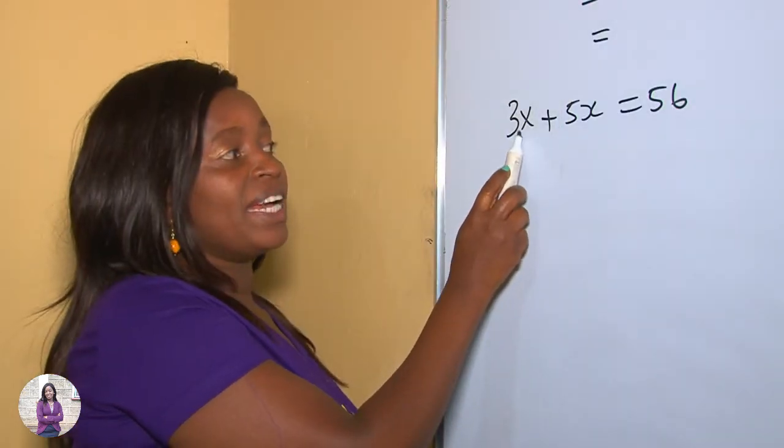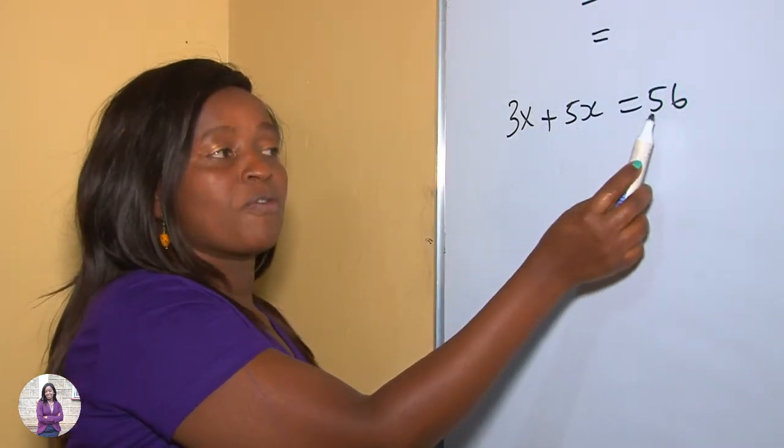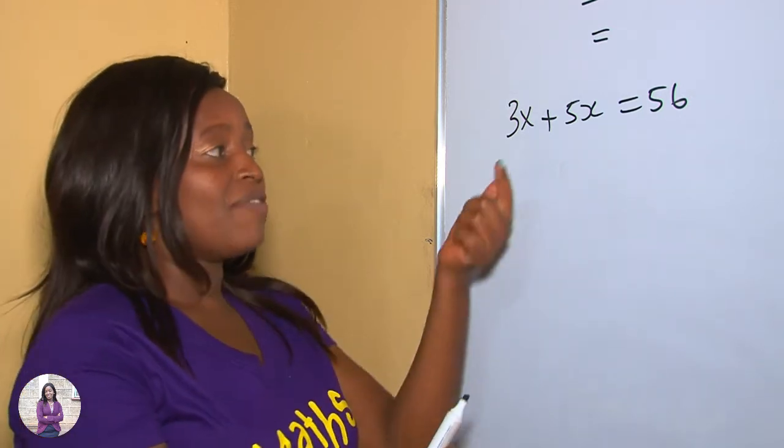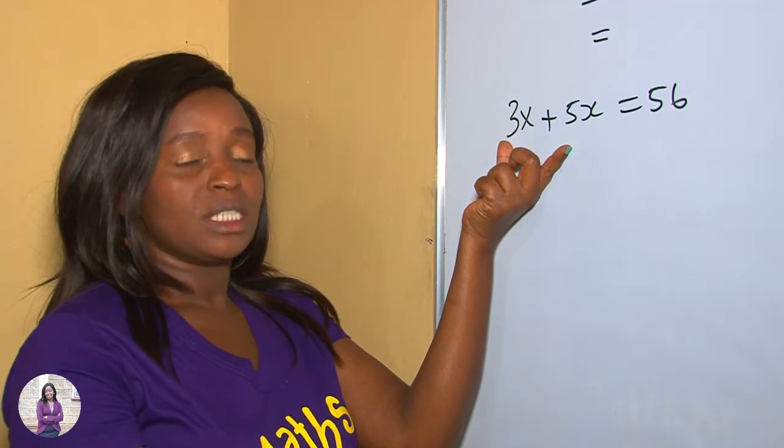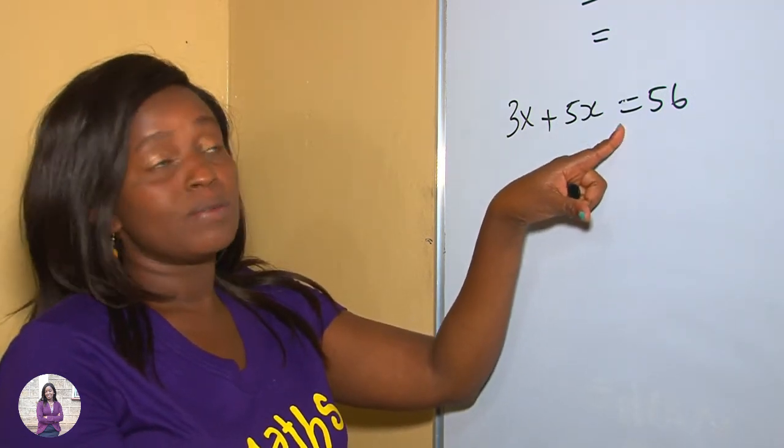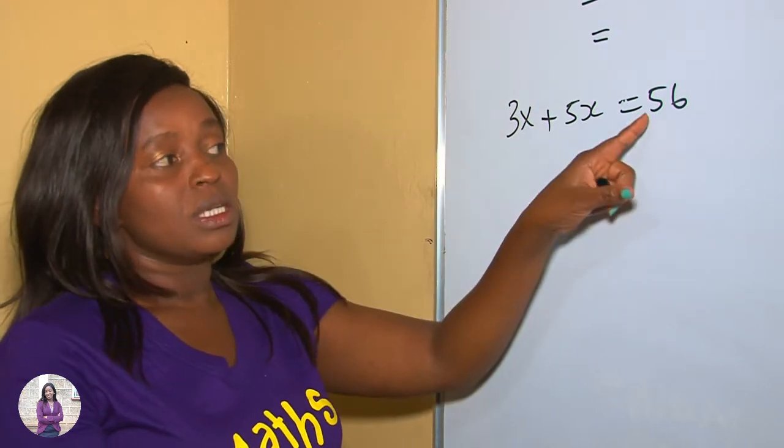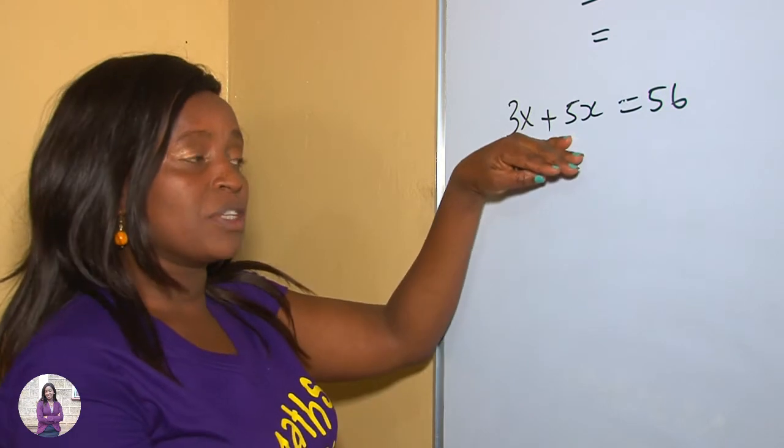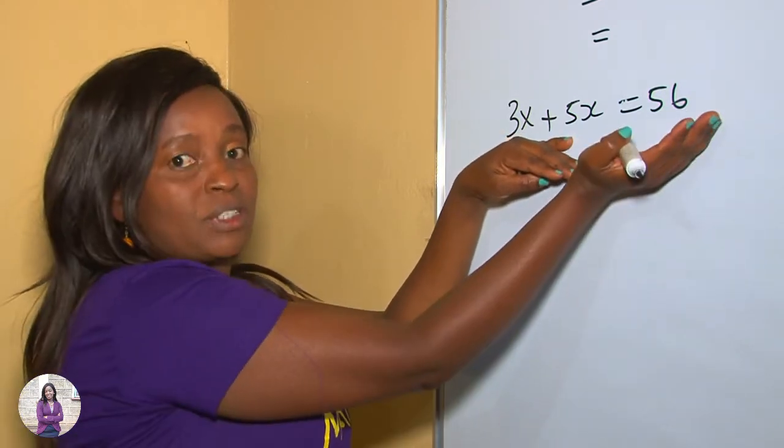For example, given 3x plus 5x is equal to 56. Practically, it means that whatever is on the left, it's equal, as we're using equal sign for equation, equal to 56. That is, 3x plus 5x is 56, and also this side is 56.